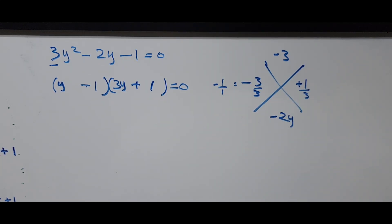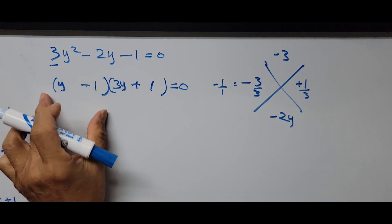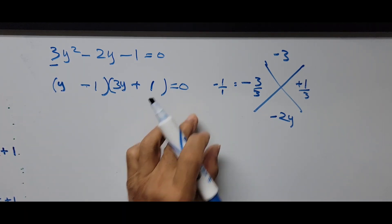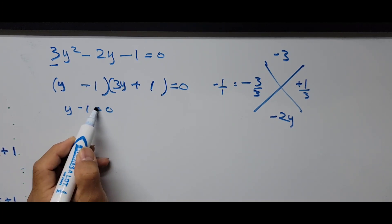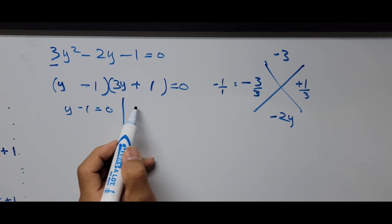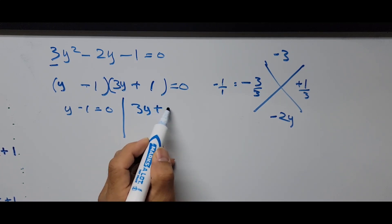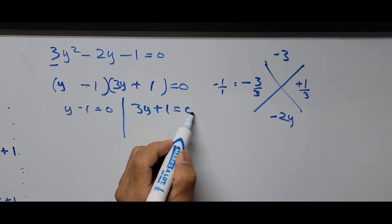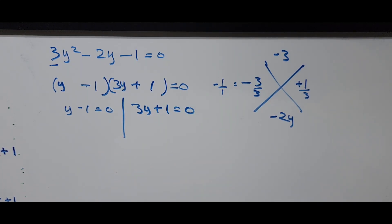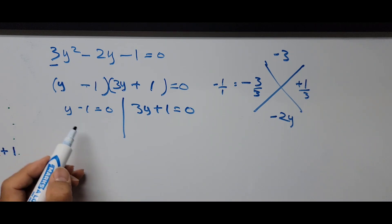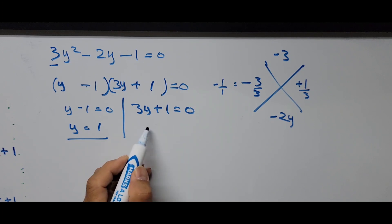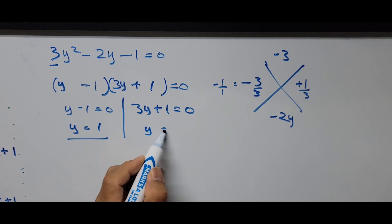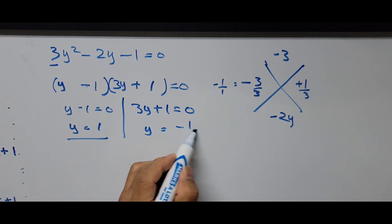Setting each binomial factor equal to zero: the first factor gives y minus 1 equals 0, and the other gives 3y plus 1 equals 0. Simplifying these equations, we get y equals 1 from the first factor, and y equals negative one-third from the second.